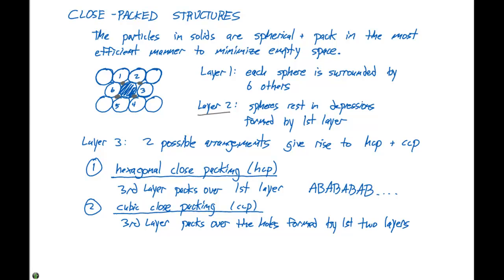And this gives rise to ABC, ABC, ABC, ABC packing. So we have layer number one, then layer number two goes right on the holes of layer one. Then the third layer packs over the holes formed by these first two layers. So, you get like a three-tier set of packing here.